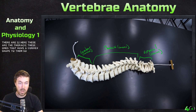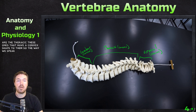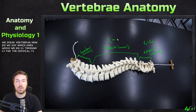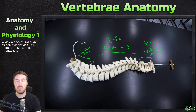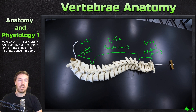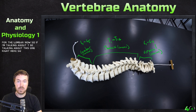So the way we name vertebrae: we do C1 through C7 for the cervical, T1 through T12 for the thoracic, and L1 through L5 for the lumbar. So if I'm talking about T2, I'd be talking about this one right here.